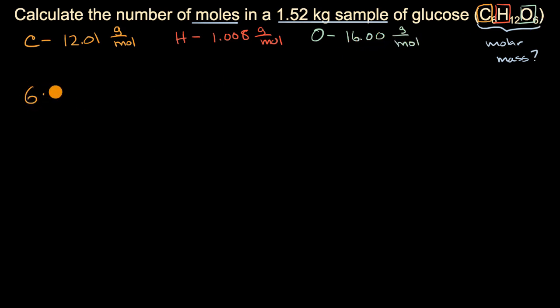So it's going to be six times 12.01 grams per mole, plus 12 times 1.008 grams per mole, plus six times 16.00 grams per mole.